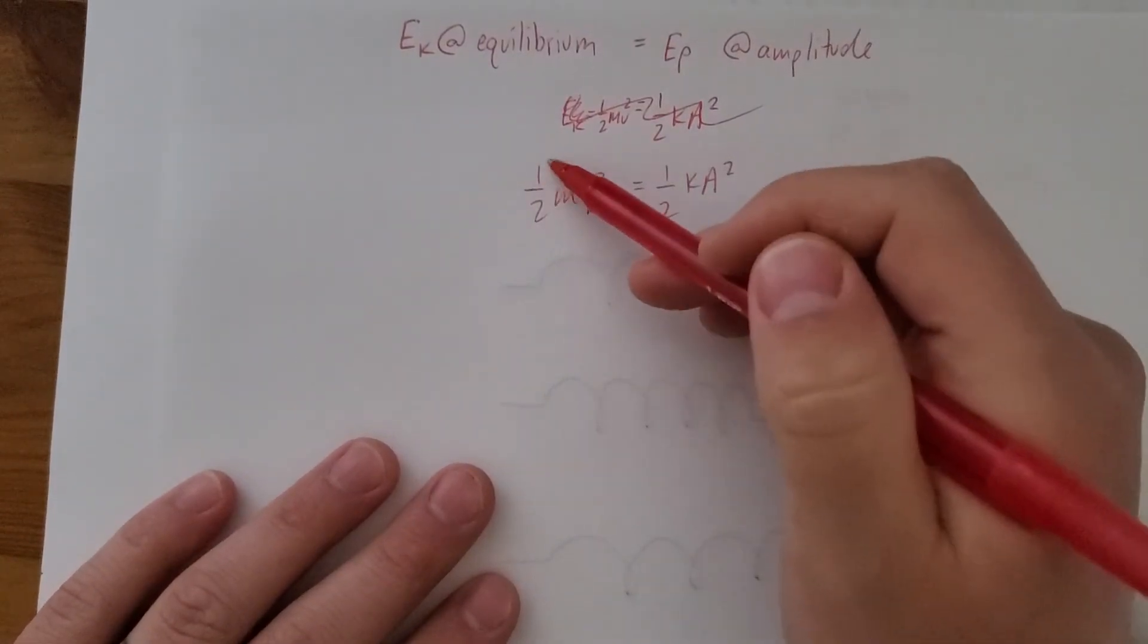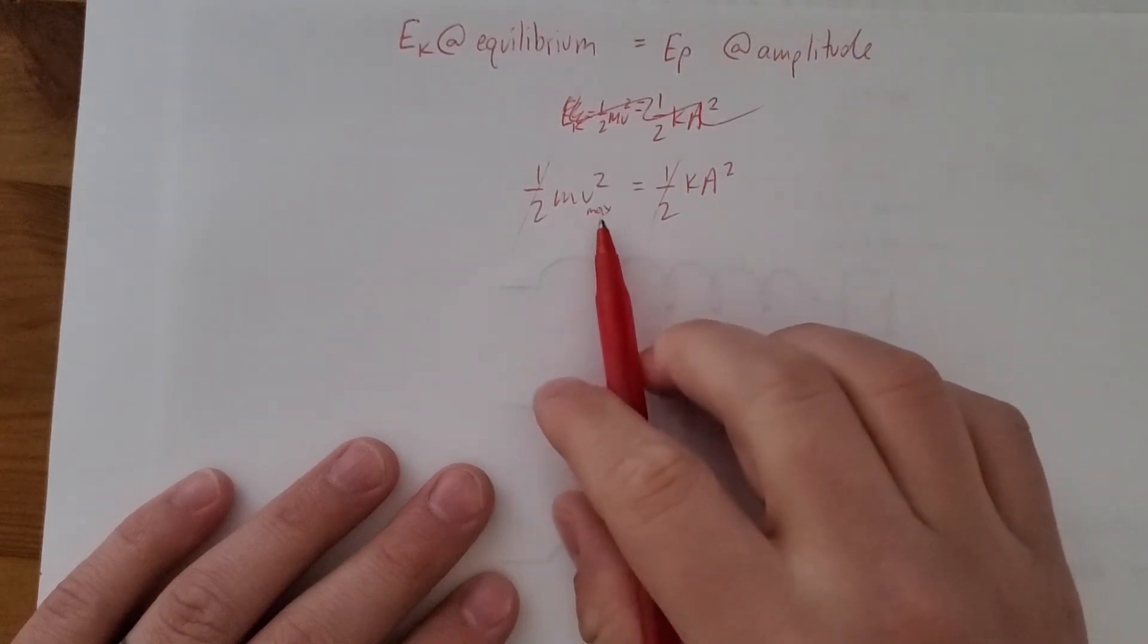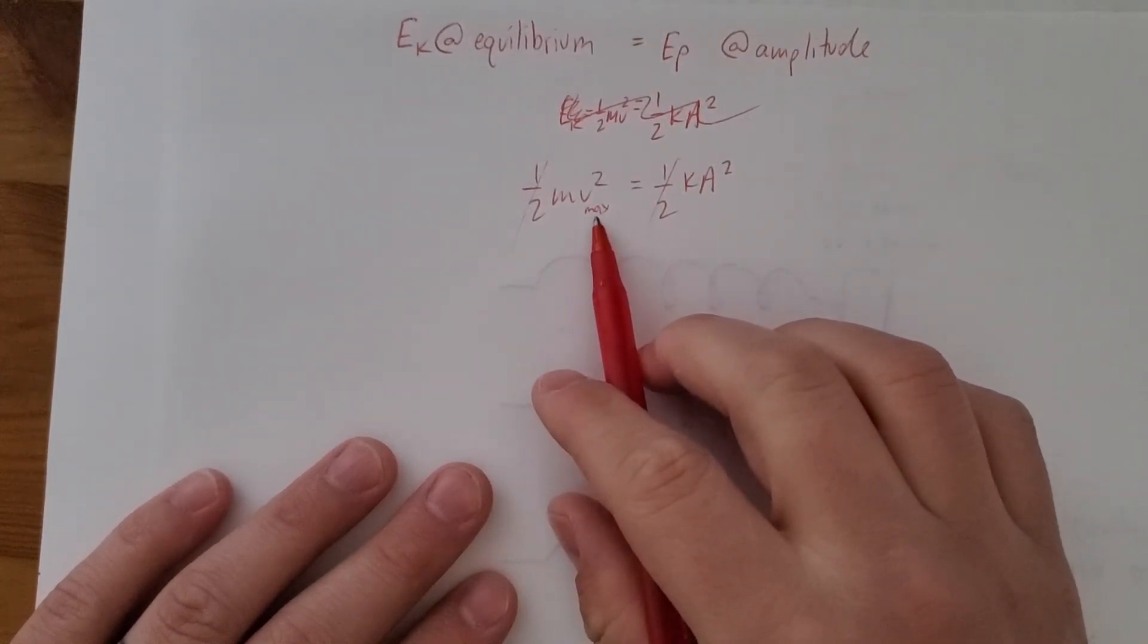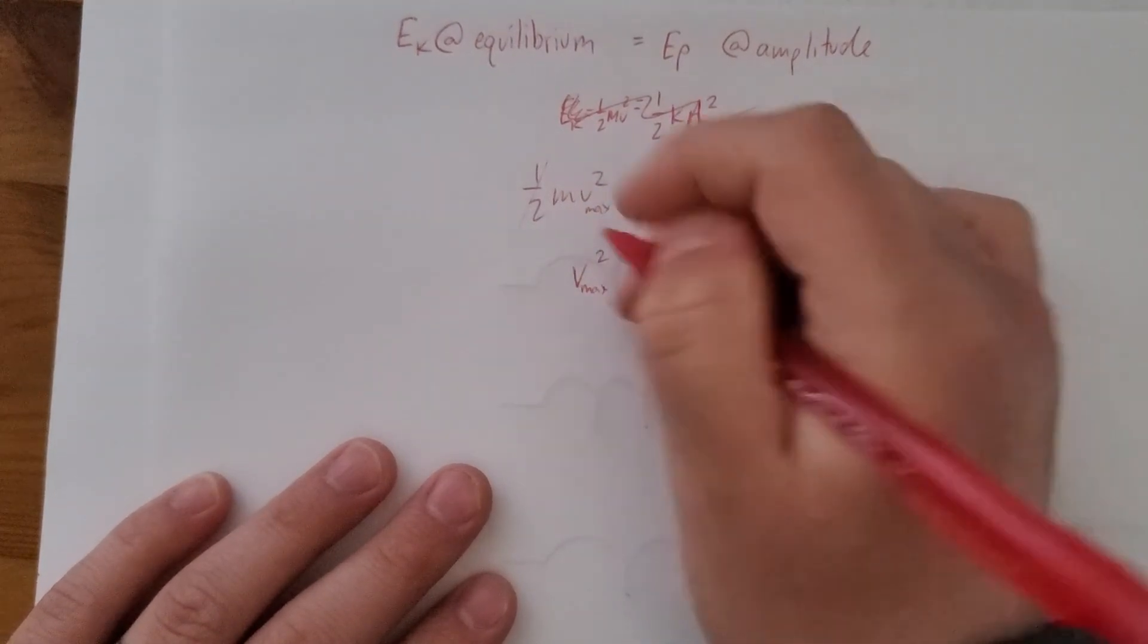I just want to see what we can get out of this. The halves cancel off, and I actually want to get an expression, a formula for v max. So divide by m.